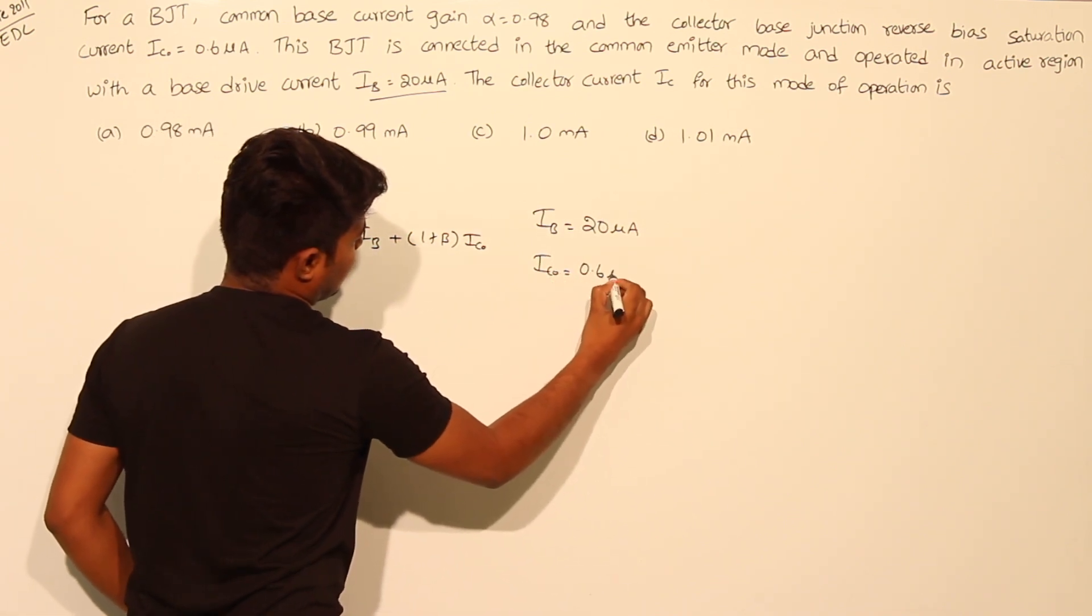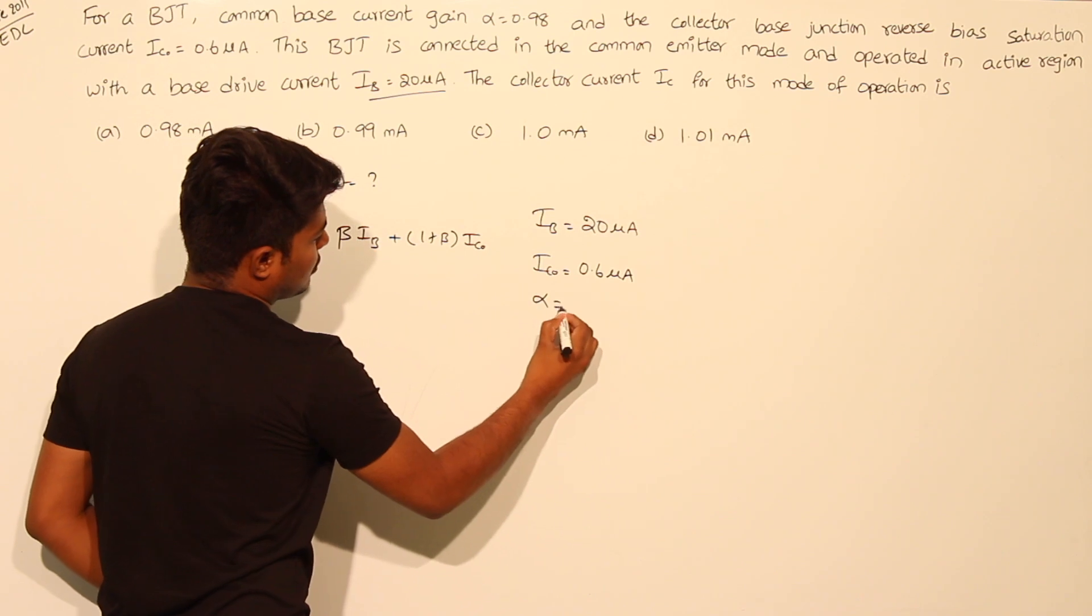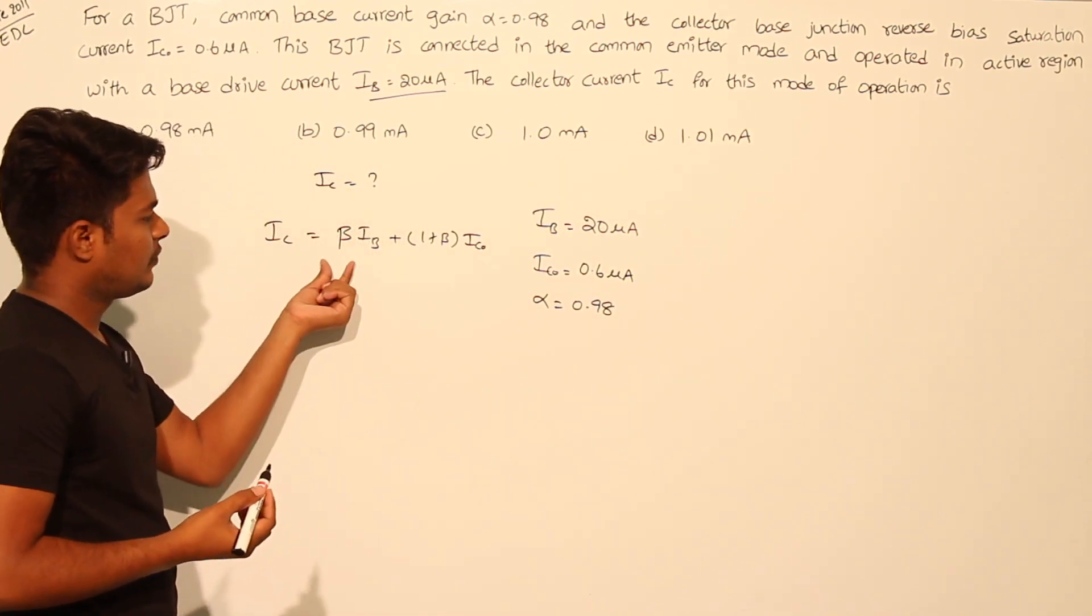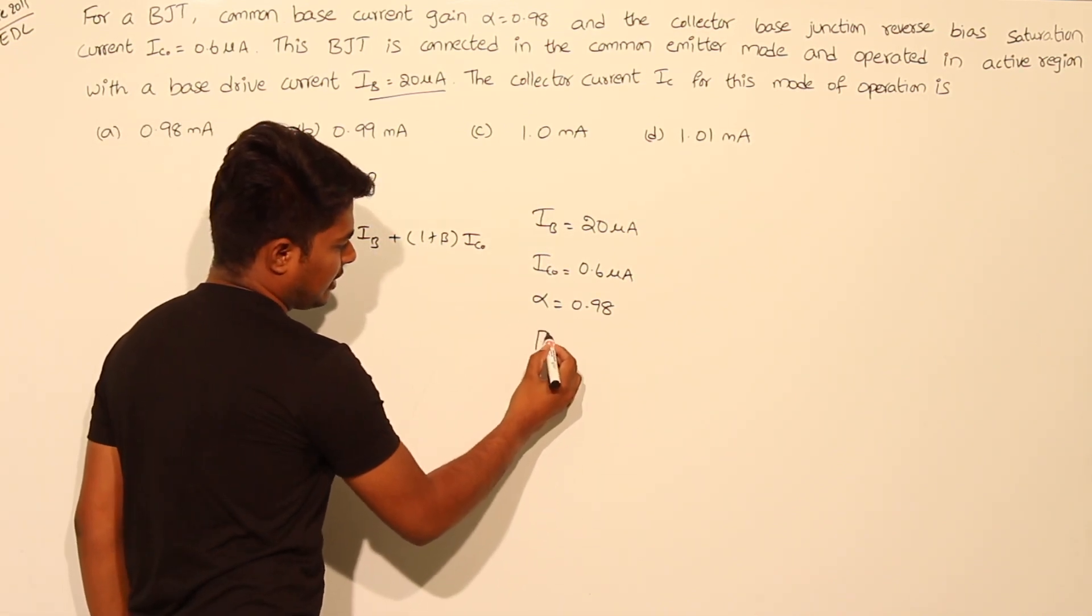IC not is the reverse saturation current, this is equal to 0.6 microamps. And given the value of alpha, alpha equals 0.98. But in this equation we need to solve in terms of beta.